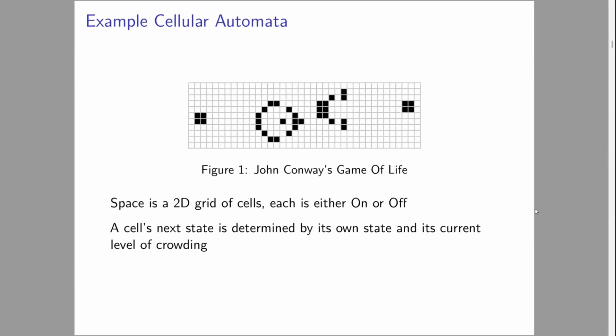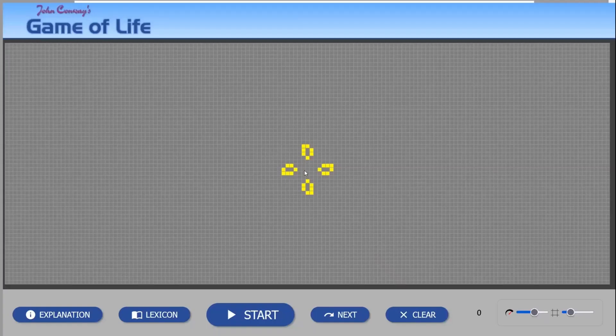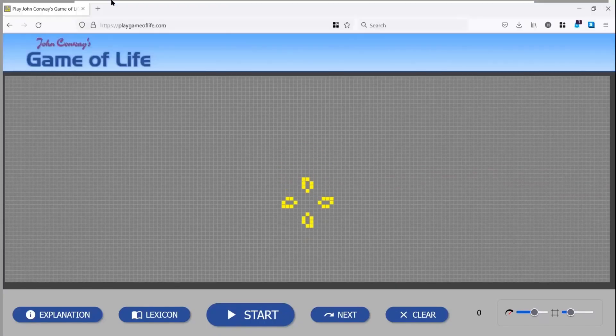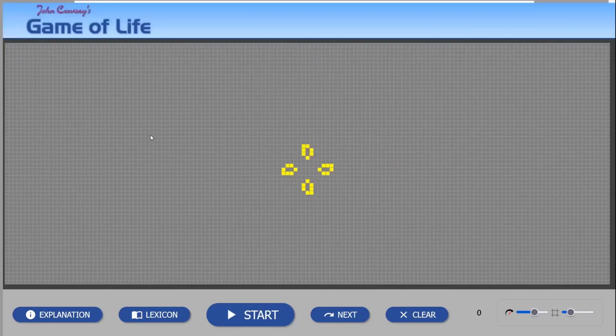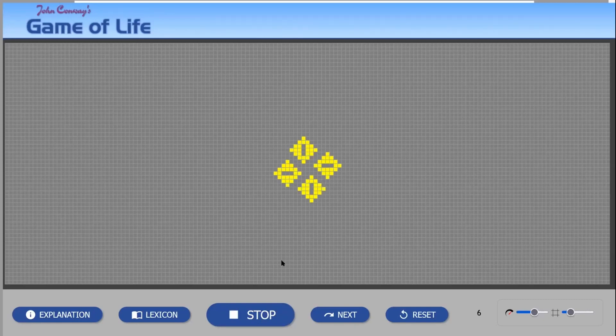Given the technical issues earlier, I really hope this part works. Here is an example. You can actually just go online, this is playgameoflife.com. There are so many of these. I'm going to quickly show one of my favorite starting positions of John Conway's Game of Life. If you aren't familiar with cellular automata, this is a fantastic way to have a play around and see the sorts of things that happen.